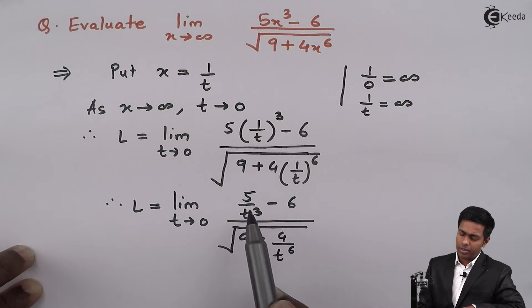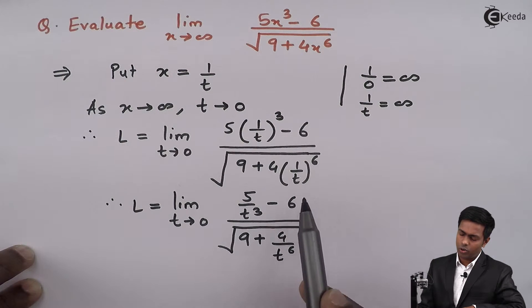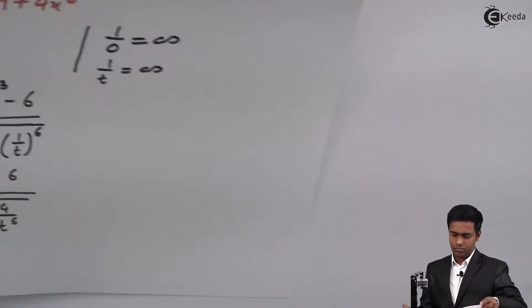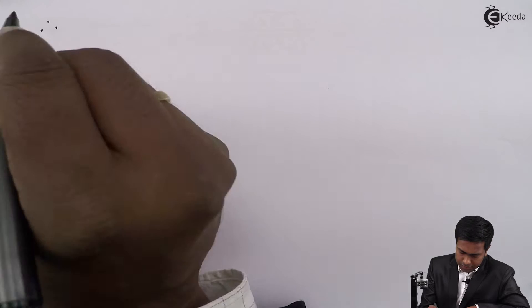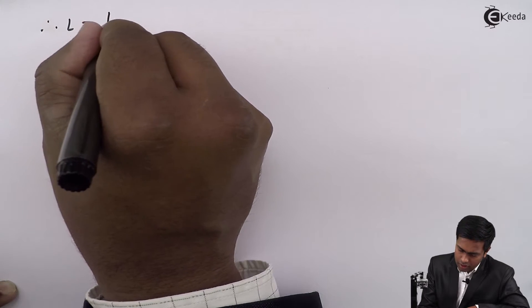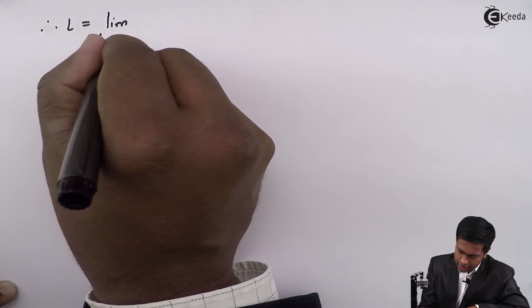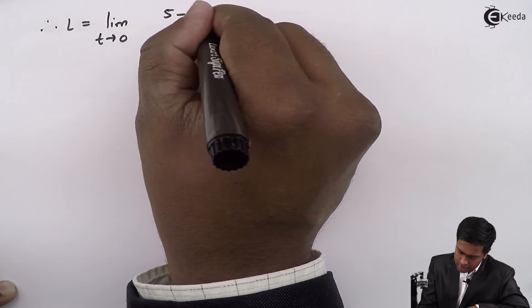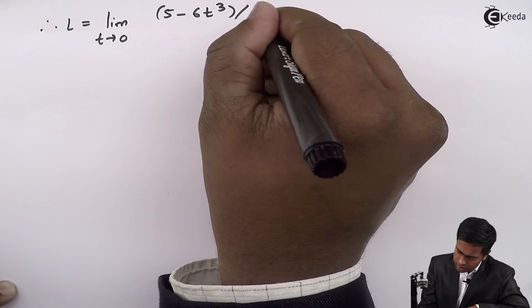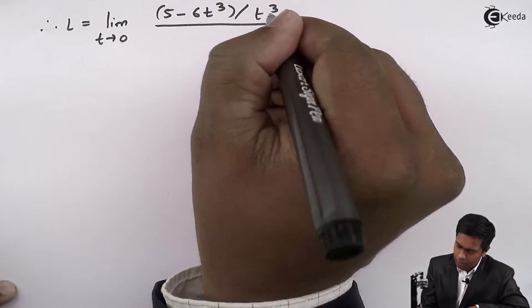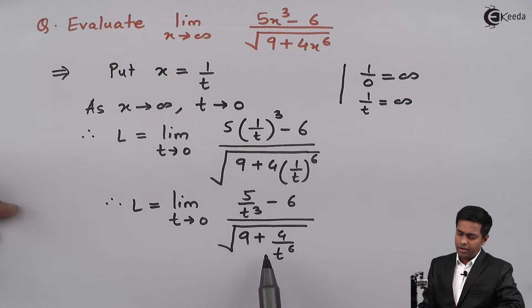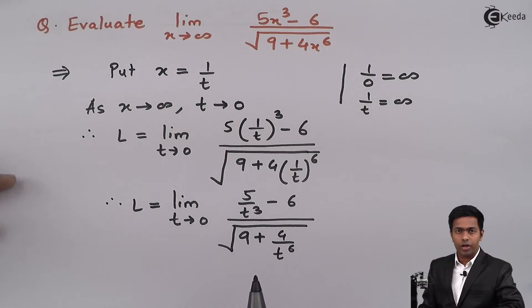After this we take the LCM in the numerator as well as in the denominator. The numerator term becomes (5 - 6t³) upon t³. The denominator inside the square root becomes (9t⁶ + 4) upon t⁶.